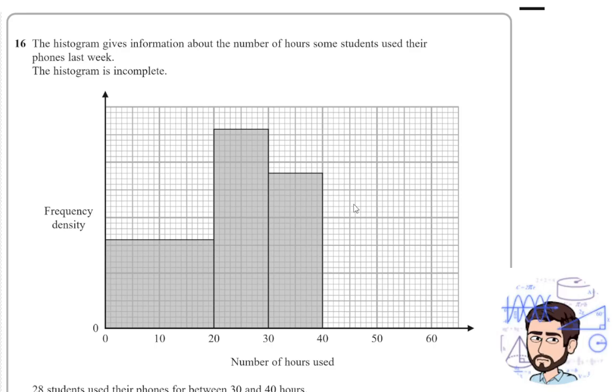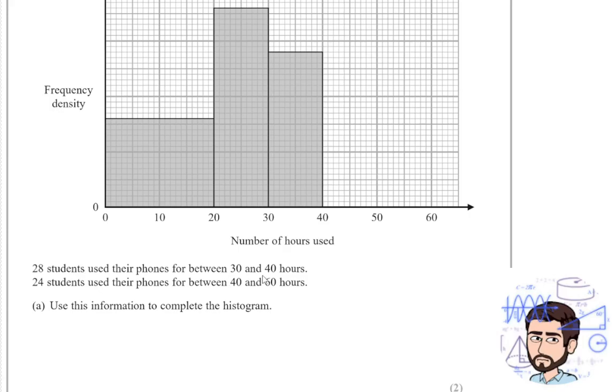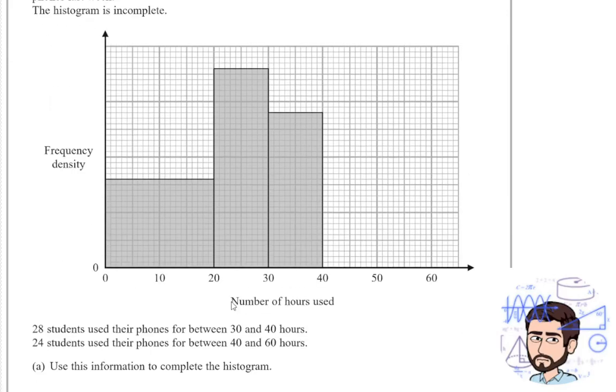Histograms. I like histograms. The histogram gives the information about the number of hours some students used their phones last week. The histogram is incomplete. 28 students use their phone between 30 and 40 hours, and 24 students use their phones between 40 and 60 hours. Use this information to complete the histogram. You'll notice straight away that there is no scale on the y-axis. Unlike a bar chart where the height of the bar tells you the frequency, a histogram is where the area of the bar is the frequency, which is why we plot frequency density on the y-axis.